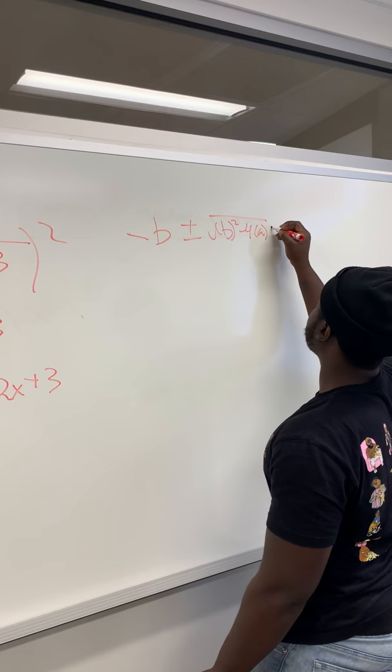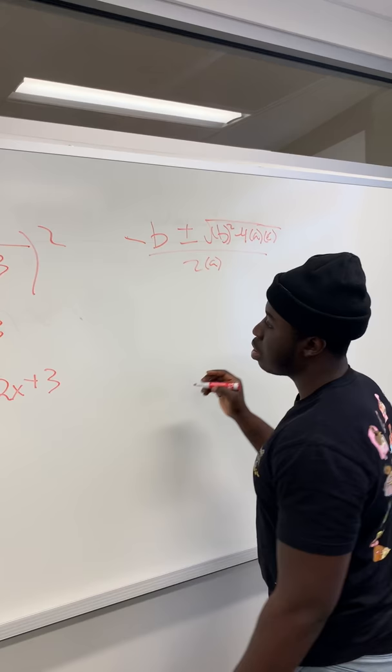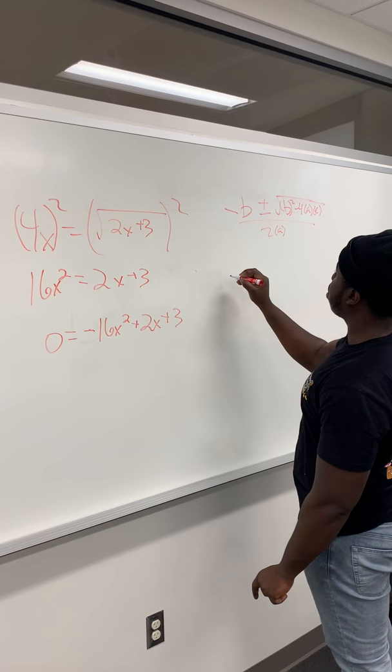The quadratic formula is negative b plus or minus square root of b squared minus 4ac all over 2a.